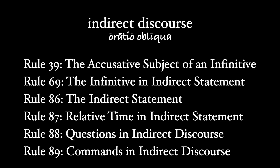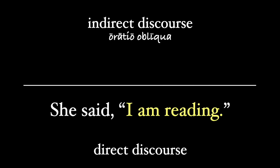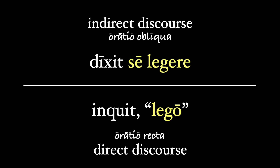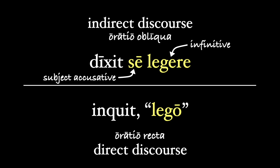The general theme of the next four rules, Rules 86 through 89, will be less about individual parts and more about the clause itself. A direct quotation gives the exact words of the original writer or speaker — oratio recta — while an indirect quotation adapts those words to the construction of the sentence. With an indirect statement, the subject is in the accusative case and the verb is an infinitive. I'll cover indirect questions in Rule 88 and commands in Rule 89.